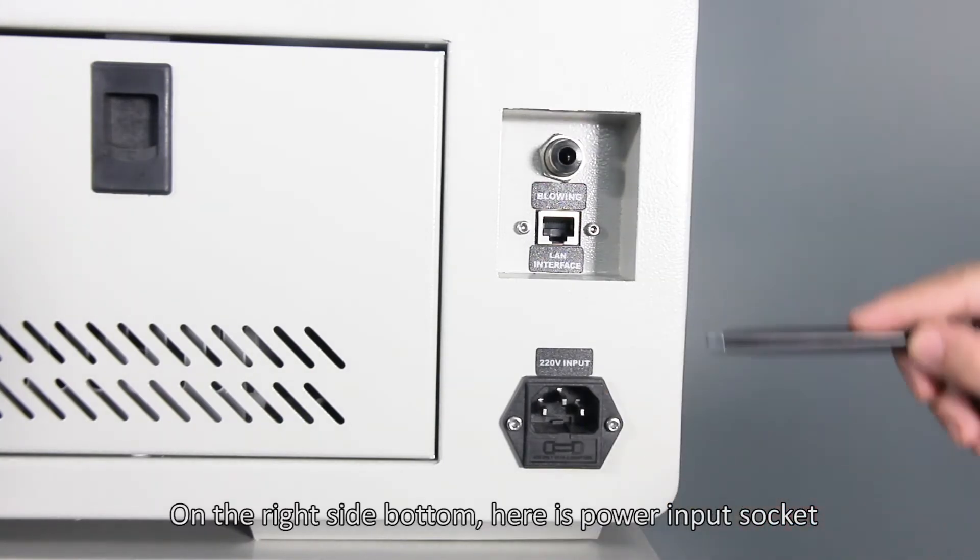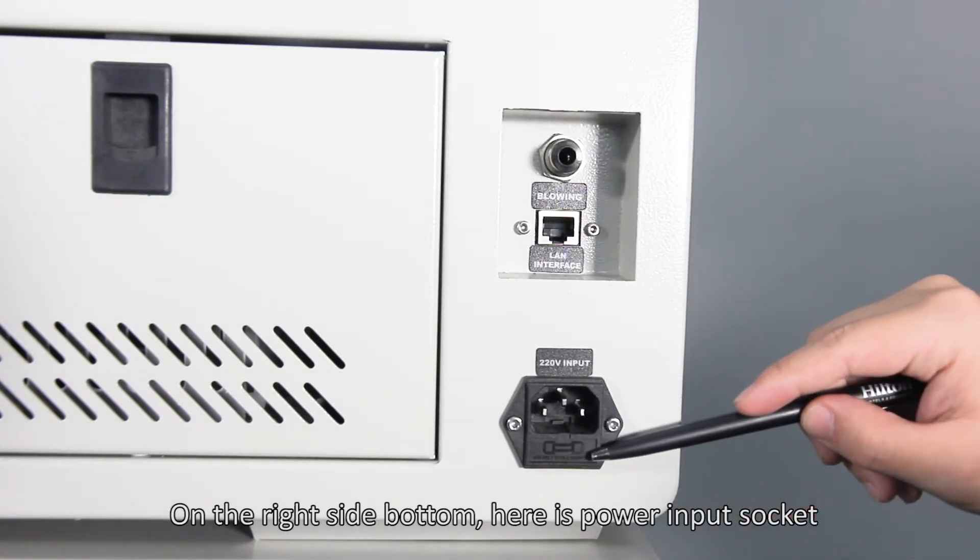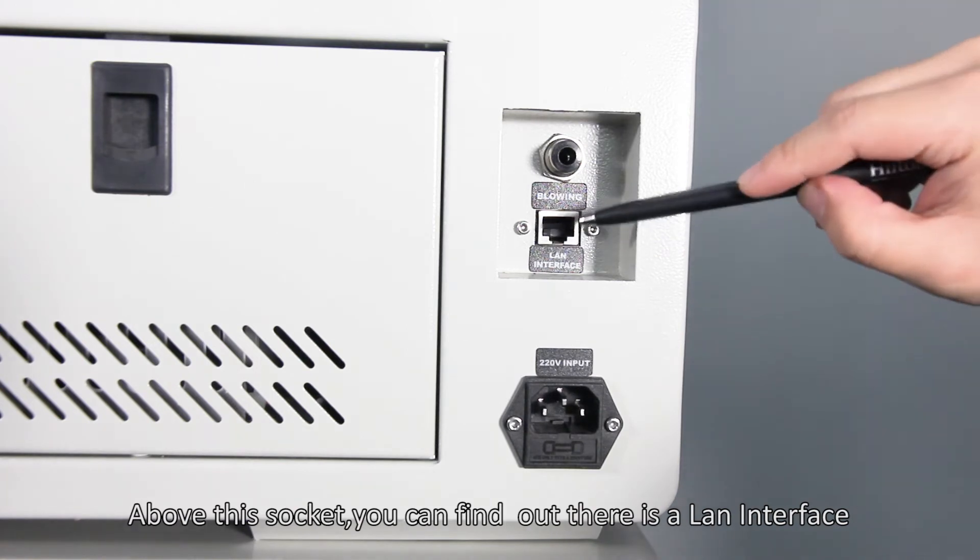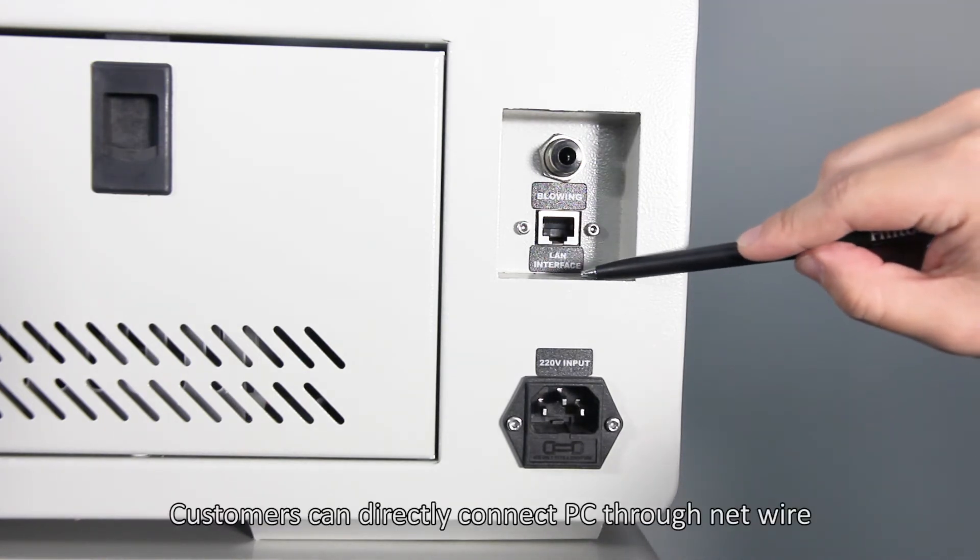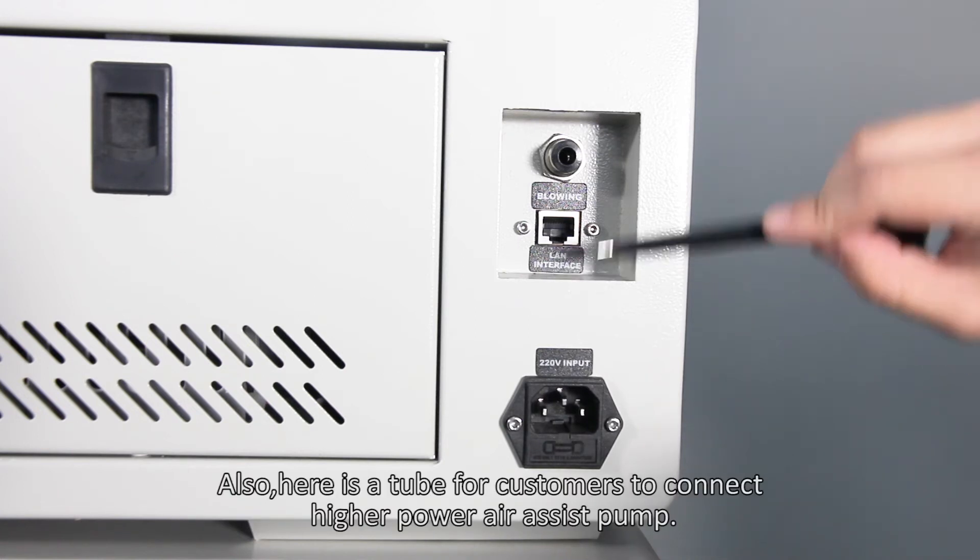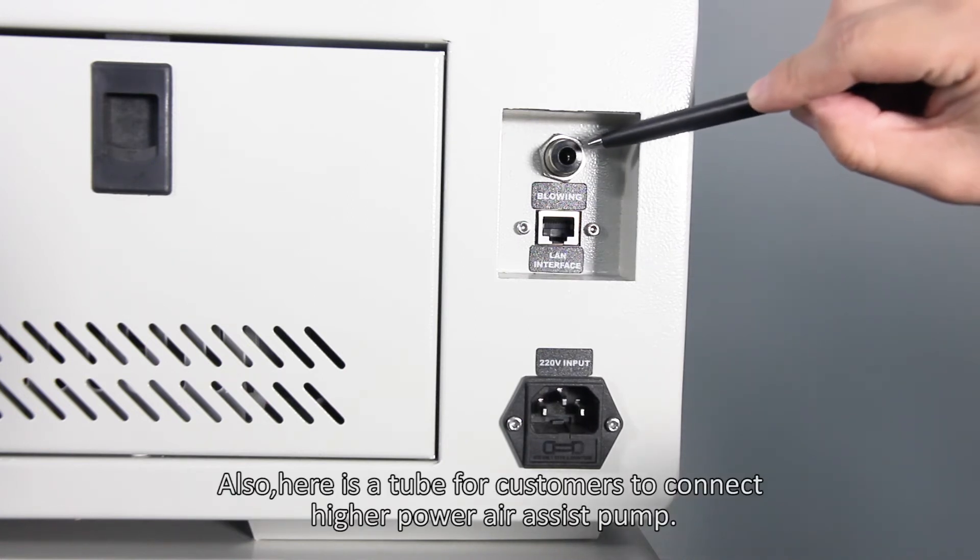On the right side panel, here is the power input circuit. Above this circuit, you can find a LAN interface. Customers can directly connect their personal computer through network cable. Also, here is a tube for customers to connect a higher power air assist pump.